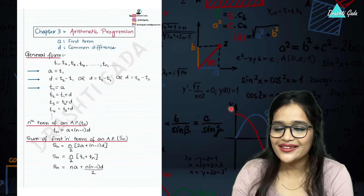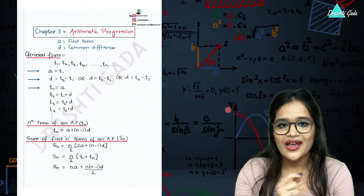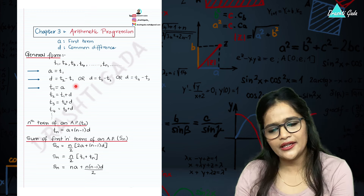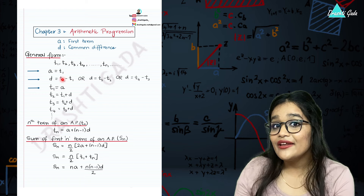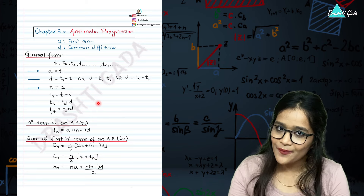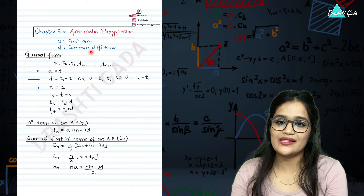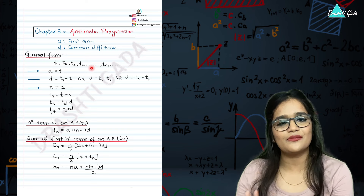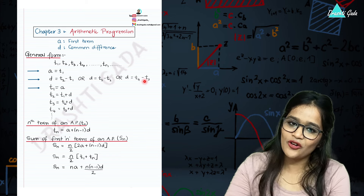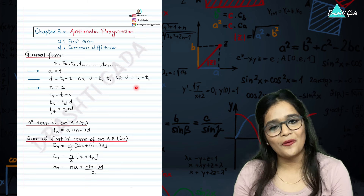Now let's discuss the third chapter, that is arithmetic progression. We have a sequence where the difference between any two consecutive terms is the same — that is why it is called arithmetic progression. We denote the first term as t1, second as t2, third as t3, and so on up to tn for the nth term. Here, 'a' always represents the first term, and 'd' always represents the common difference. Take any two consecutive terms and subtract them — subtract the next term from the previous one — to get the common difference.